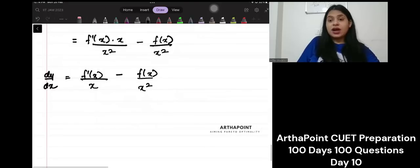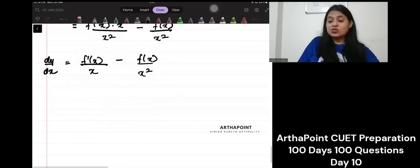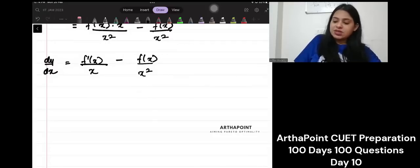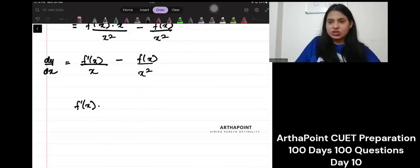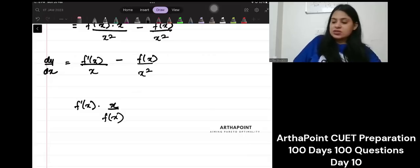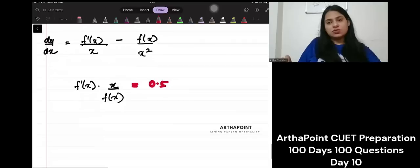Now, what do I have to find out? I have to find out, so I am given that elasticity of fx is 0.5. That means when I do f dash x, this is the slope. This is how function changes as x changes into original value of x by original value of function. When I do this, this value is given to me as 0.5.